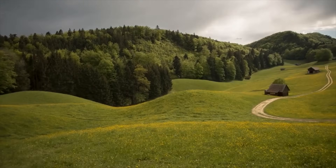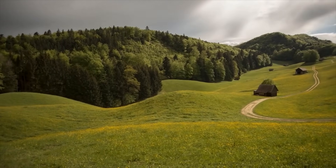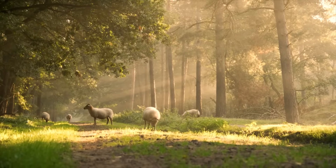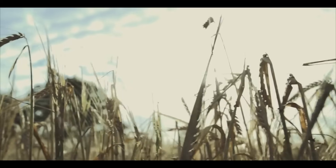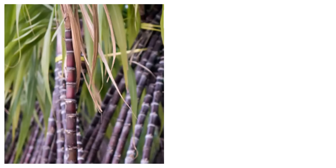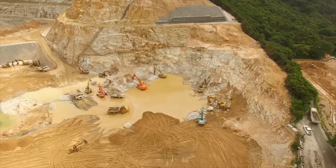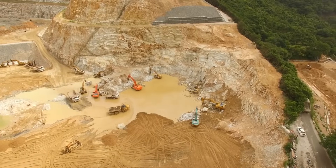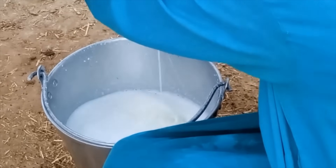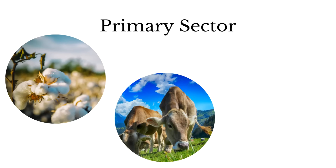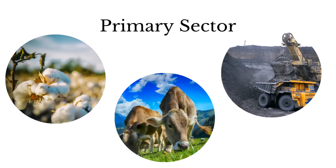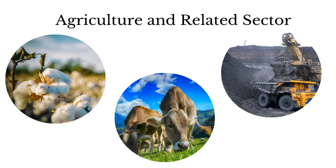When producers depend directly on nature for what they produce, that is primary production. For example, growing sugarcane or cotton, extracting minerals from the earth, or supplying animal products — things we get directly from nature. This is the primary sector, which we also call agriculture and the related sector.